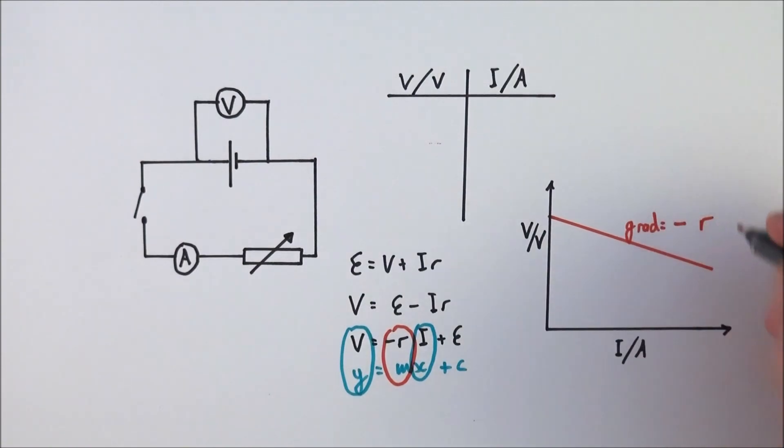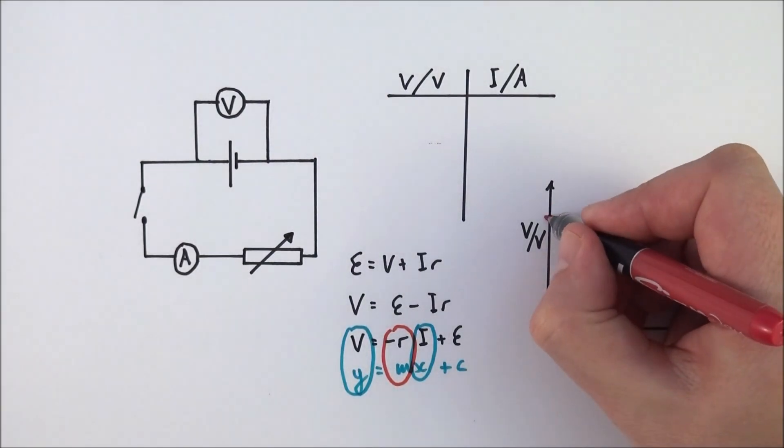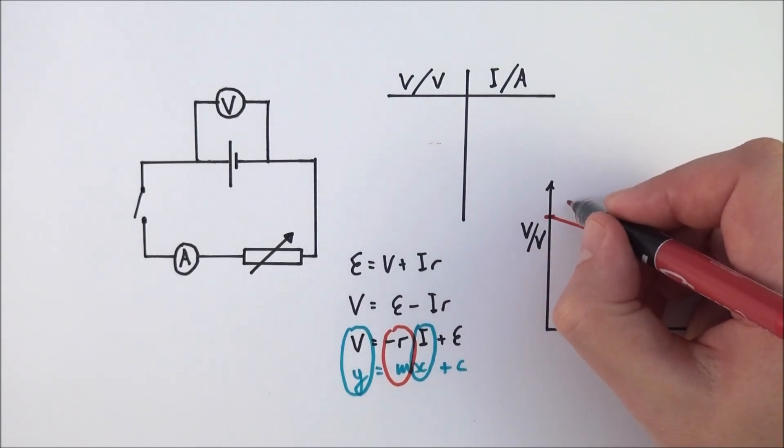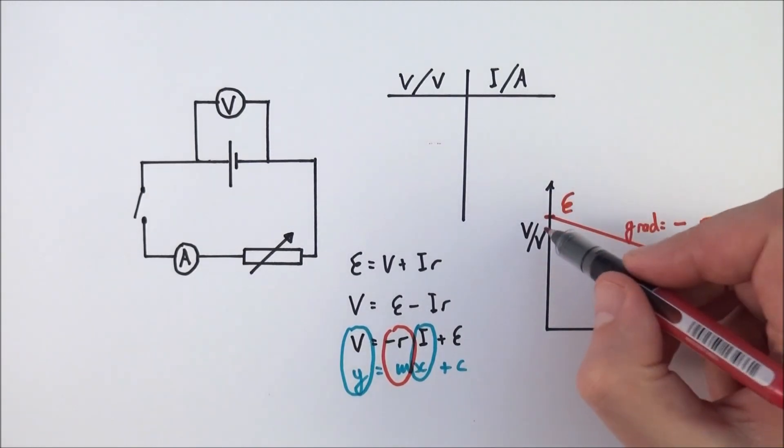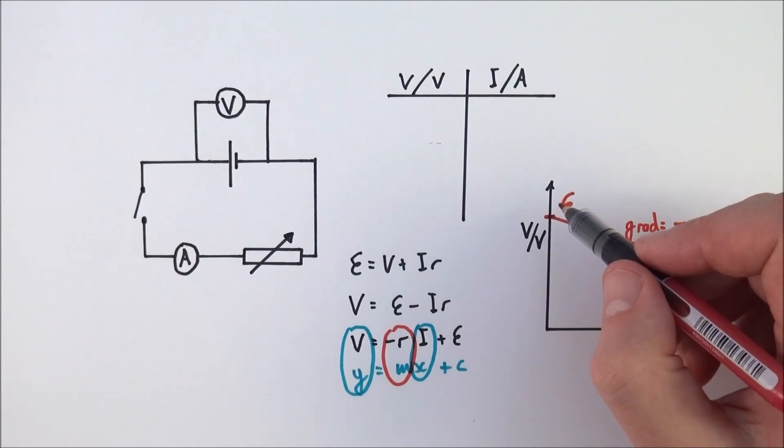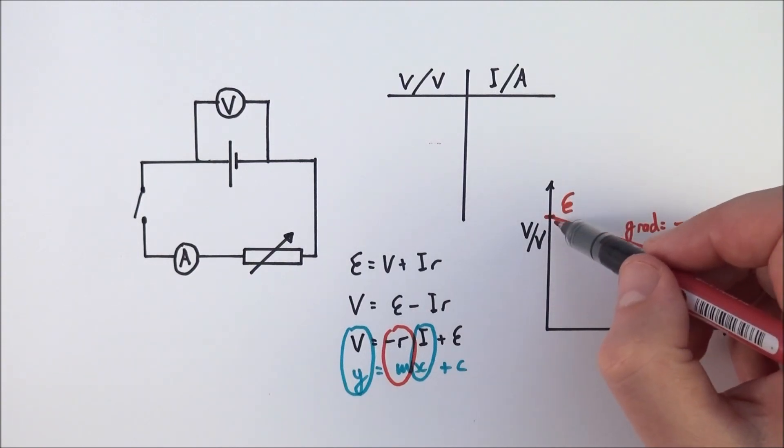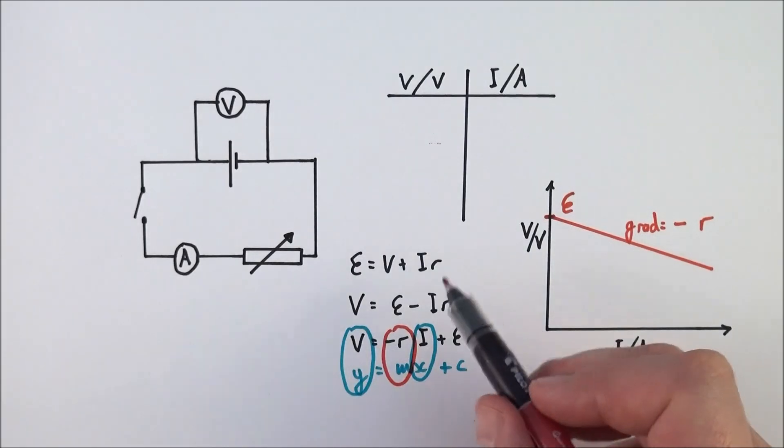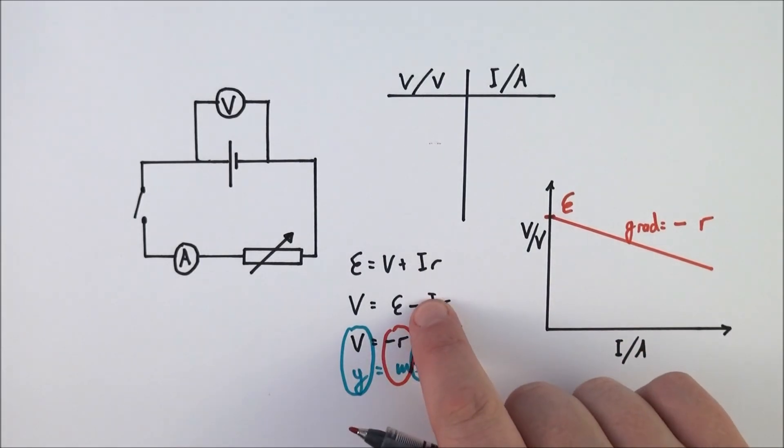So the gradient is going to be equal to the negative value of the internal resistance, and the y-intercept here is effectively the true EMF of that battery. So if it's a three volt EMF, we only get the maximum energy out of it when you have no current flowing, and therefore the internal resistance has no effect on it.